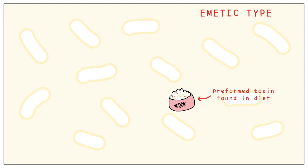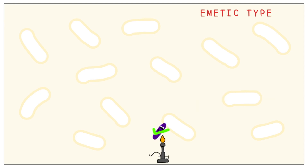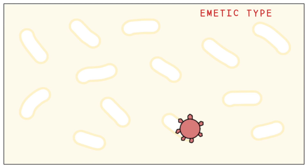This is a preformed toxin, which is found in the food you've consumed. This toxin is heat-stable, so heating up your fried rice won't help. It has 3 odd serotypes: 1, 3, and 5.